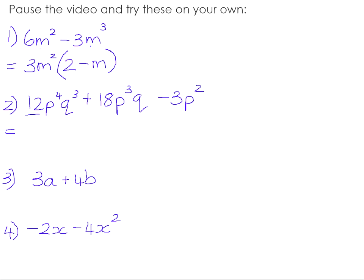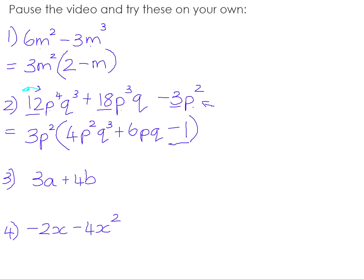For Question 2, the highest common numeric factor of 12, 18, and 3 is 3. P is common to all three terms, and the highest power of p common to all three is p squared. Q is not common because it's missing from the third term, so the highest common factor is 3p squared. We then multiply 3p squared by 4p squared q cubed to get 12p to the power of 4 q cubed, by positive 6p cubed to get 18p cubed q, and by negative 1 to get negative 3p squared. Be very cautious not to omit that negative 1 — leaving it out means you'll lose the last term when you check by multiplying back out.